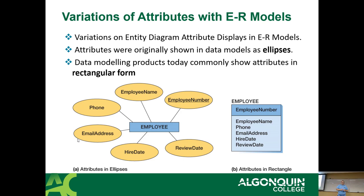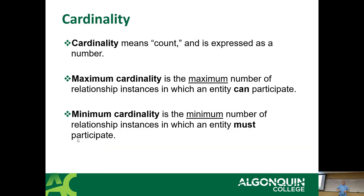There are variations in an ERD. In the original data models, attributes are shown as ellipses and the entity is a box. I covered this last week, so I'm not going to cover it in detail this week. Essentially that's an entity, these are attributes — this is the exact same thing in a box format. And cardinality — I think we talked about cardinality last week too. Cardinality is the count — maximum and minimum cardinality — and determines how many instances participate in a given relationship.